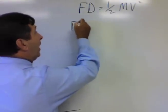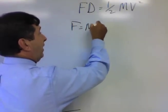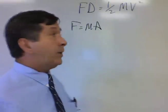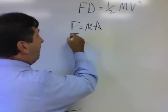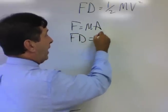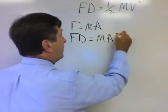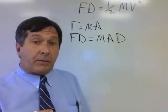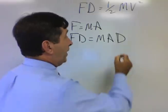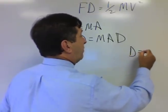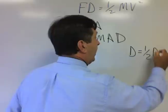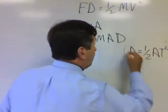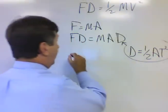Let's start again with F equals ma. I'm going to multiply both sides of this equation by d, and I'm going to get Fd equals mad. Now from our kinematics equations, which we discussed earlier, distance equals one half a t squared. I'm going to substitute this in for d.